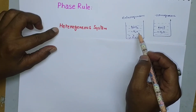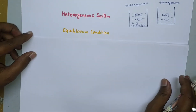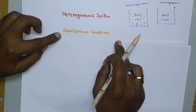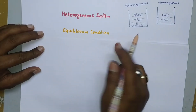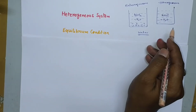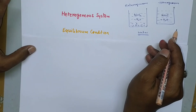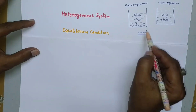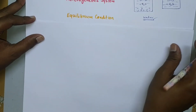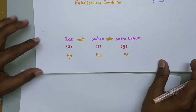This phase rule is applicable only for a heterogeneous system which is always in equilibrium conditions. What is meant by equilibrium condition? Consider a water system — 'system' means what is under investigation. If you study the properties of water, then water becomes the system.